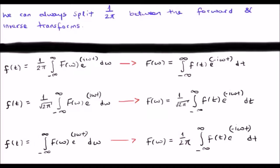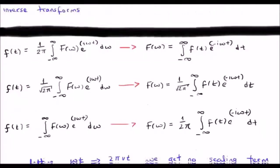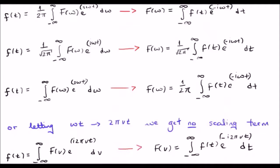The final thing I'd like to say is, we were doing this using omega. We can always go back to 2 pi times nu, the frequency. And if we do that, and it's quite simple using the same steps,